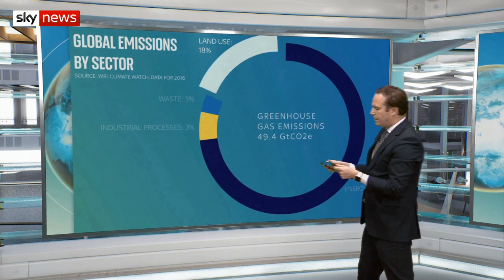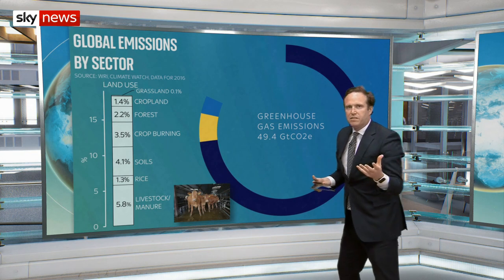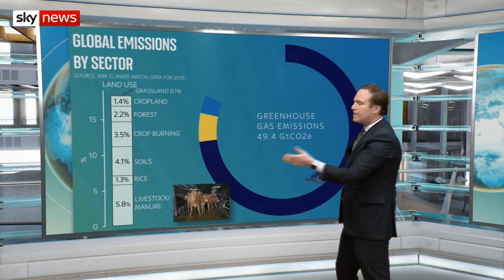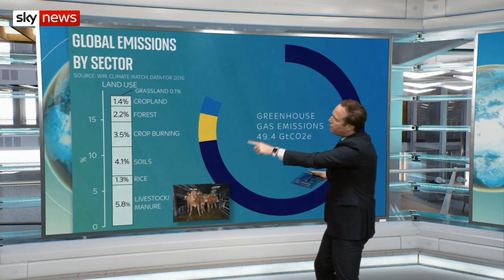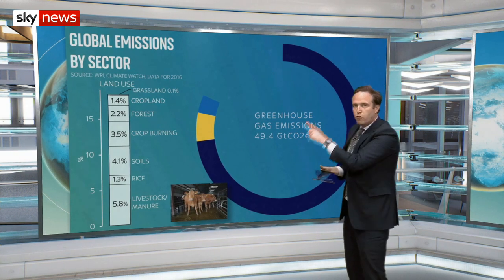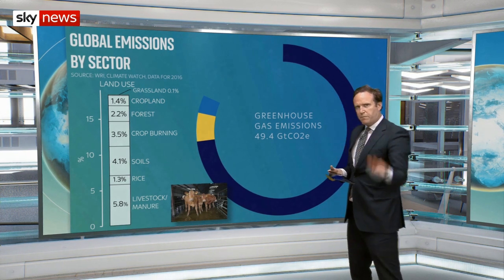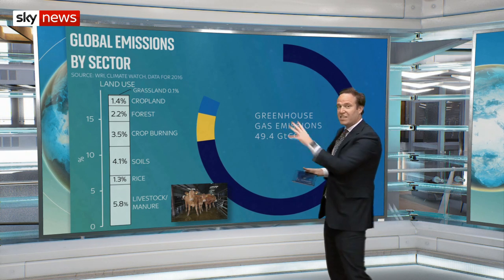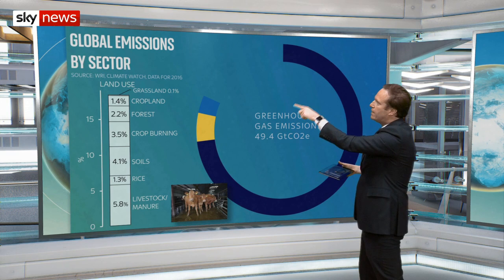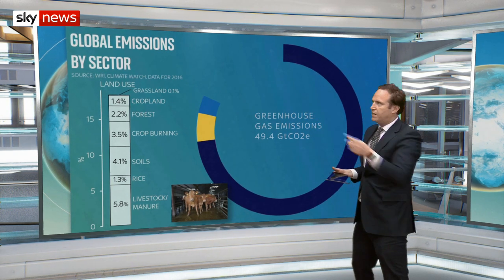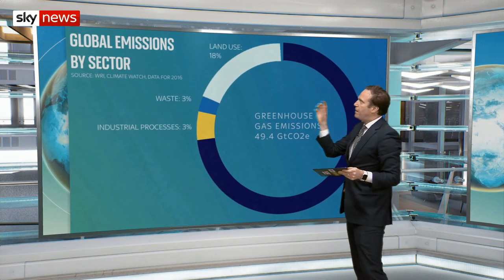We can break down land use and see where the emissions are coming from within it. Livestock manure is 6.8%, and by far and away the biggest chunk is emissions coming from cattle and other livestock. Just above that, 1.3% is for rice farming — partly because of methane created when paddy fields are submerged and bacteria produce methane. So 1.3% of total global emissions are down to rice. Then you've got soils, crop burning, deforestation — about 2.2% of total global emissions — and cropland and grassland as well.